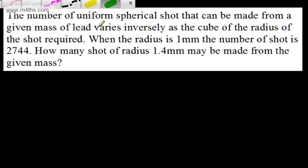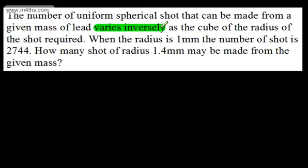The key term right here is varies inversely. We're looking at inverse proportion. What I'm going to do here is let n be the number of shot, and we will let r be equal to the radius of the shot.